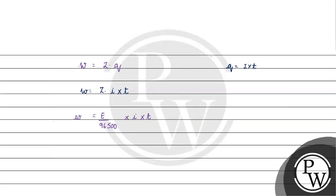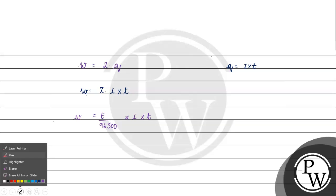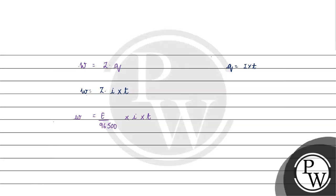E is our equivalent weight. Now, if we talk about this question — current I is given as 2.5 ampere. Time is 6 minutes 26 seconds. If we convert to seconds: 6 × 60 plus 26 equals 386 seconds.